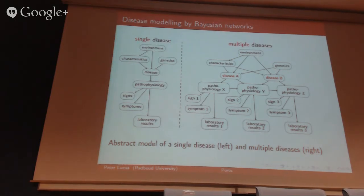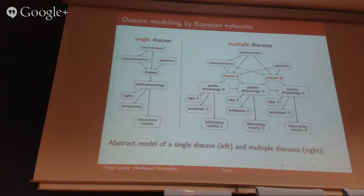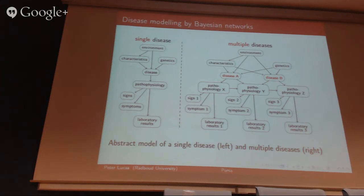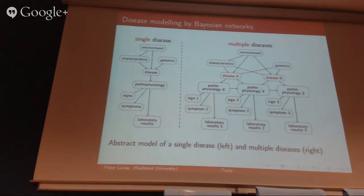The outgoing variables are always pathophysiology, signs, and symptoms — always going outside the disease variable. The same is true for laboratory results. So you always get exactly the same structure. Even without any data, you already have a general feeling of how your model will look. If you've got data, it gets even better — you get a model that fits the data pretty well.